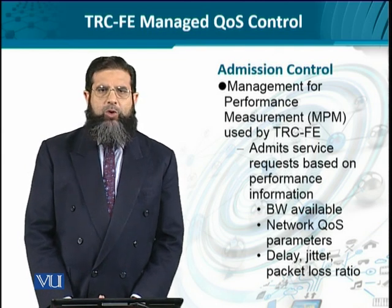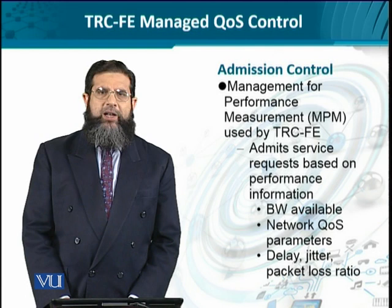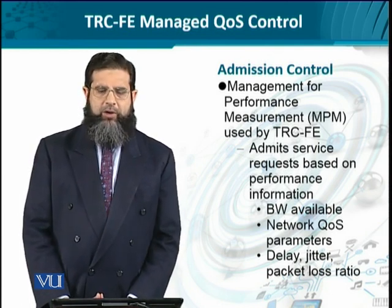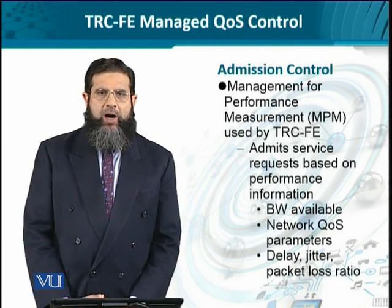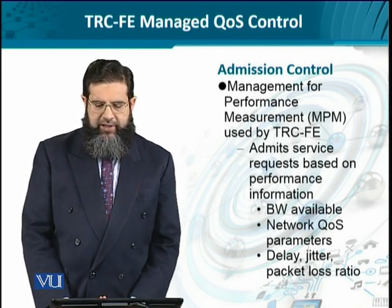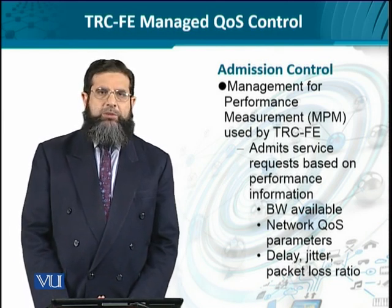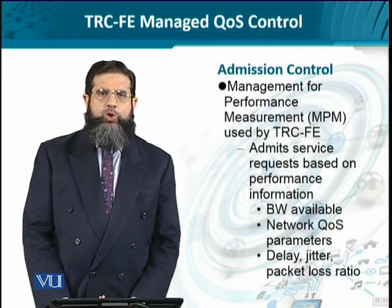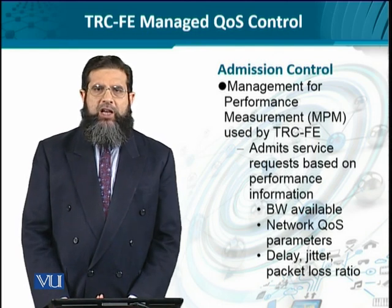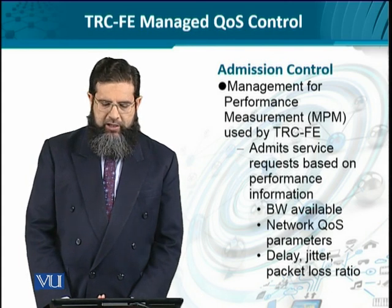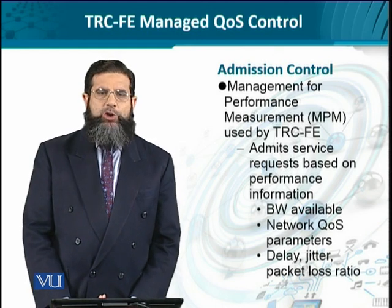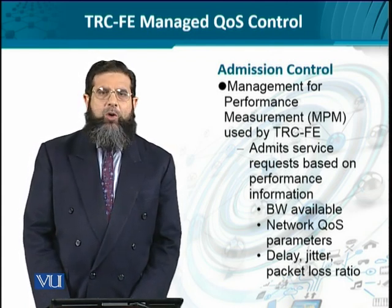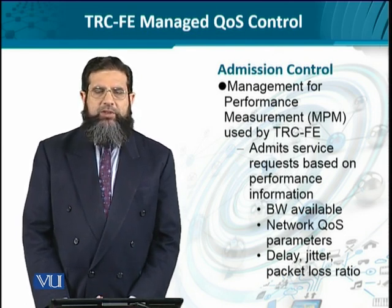When we are talking about admission control, it is dependent upon the availability of existing resources in the network and the requirement coming in as a certain QoS request for a flow, particularly for media flow. To understand the current state of the network, there is something known as the management for performance measurement (MPM). It is a function used to assess the current state of network parameters in order to make sure that QoS requirements are amicably met. This MPM is used by the TRC FE to admit service requests depending upon the QoS profiles on the basis of existing network performance.